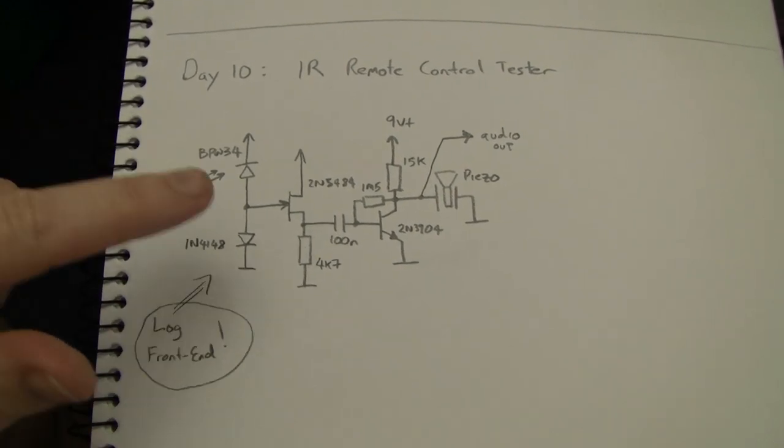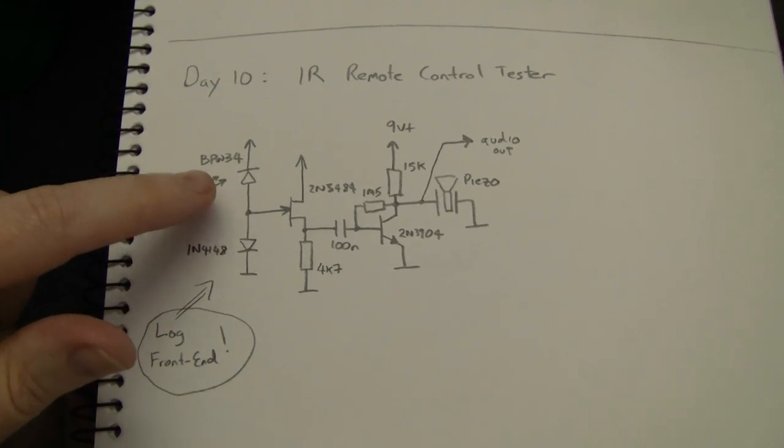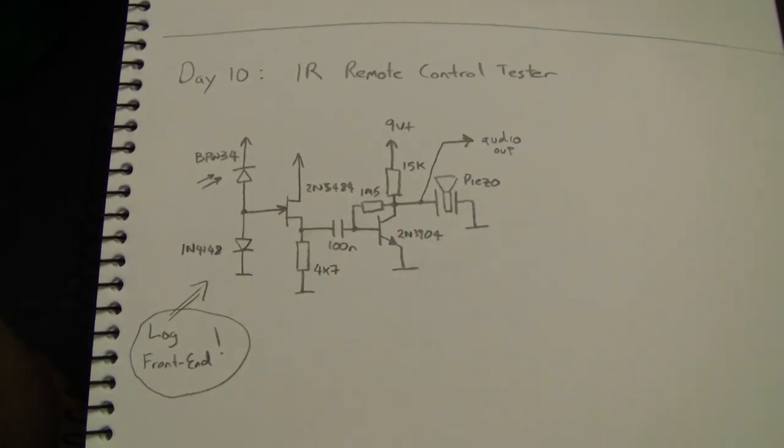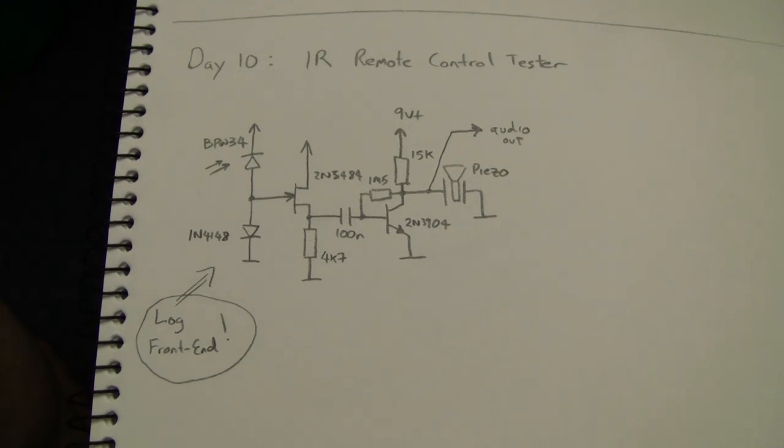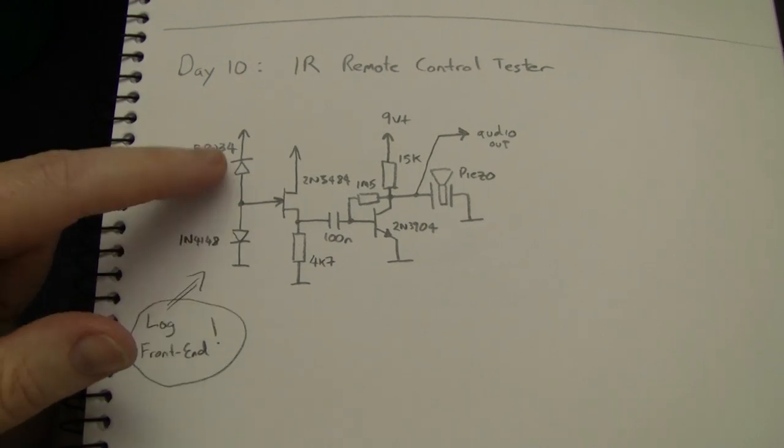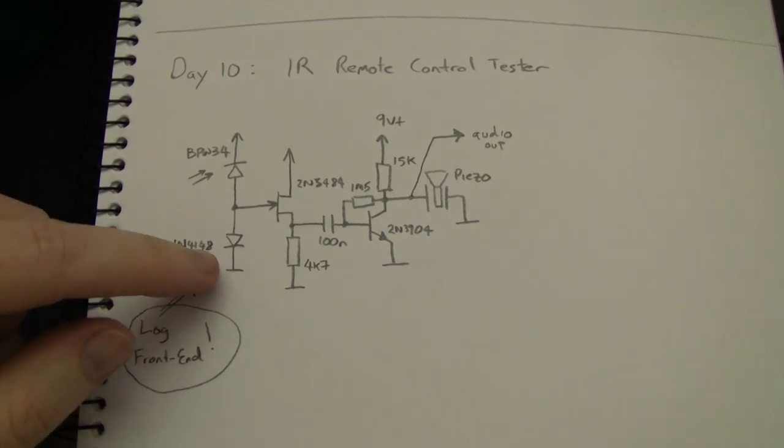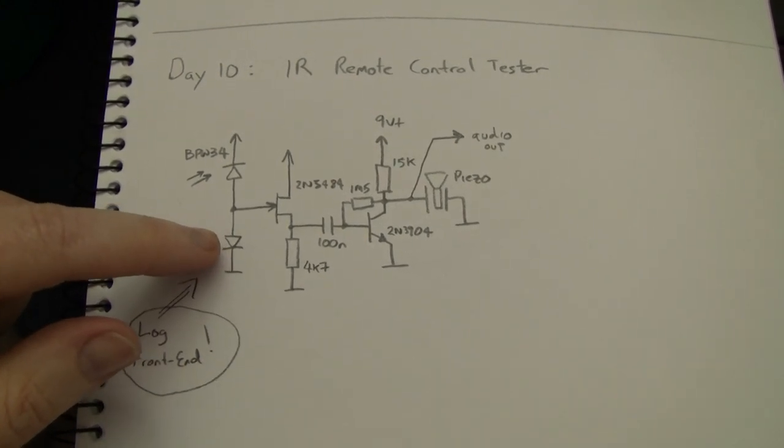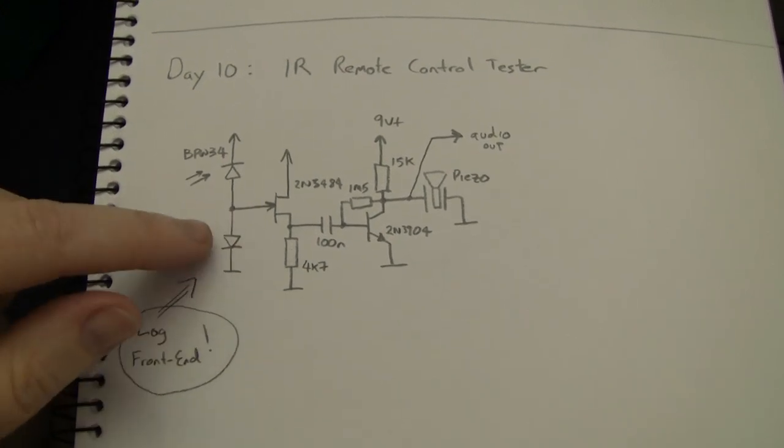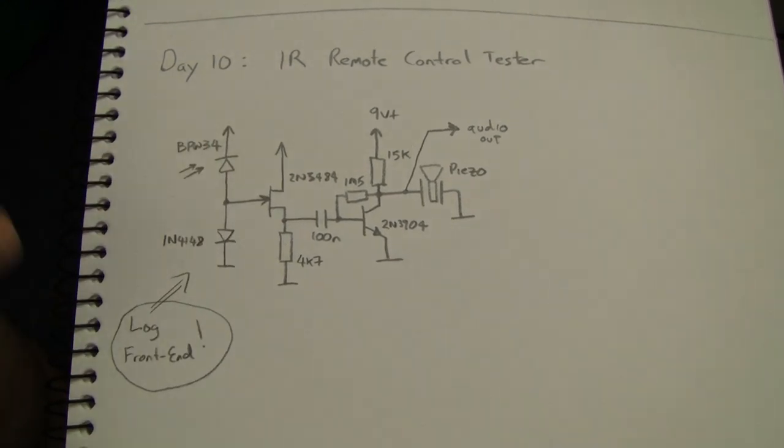This is a simple little circuit with a BPW34 pin photo diode in the front end that will directly pick up the infrared radiation produced by the remote and tell you via making a sound through a piezo whether or not the thing is operating. Lots of circuits like this out on the net, but this one has its own little unique features. This has a logarithmic front end that doesn't jam easily, which is quite useful. So it can be used without any shielding of the lead, the photo detector.